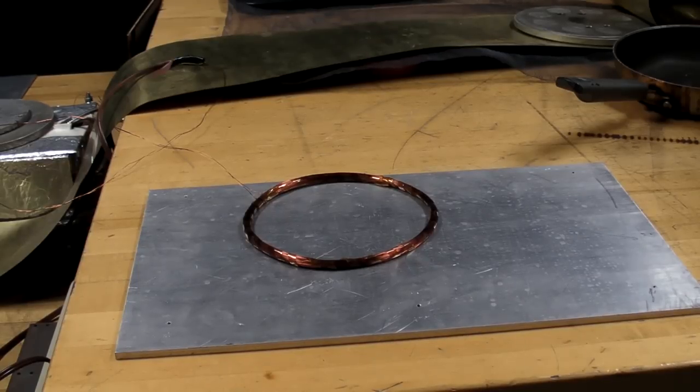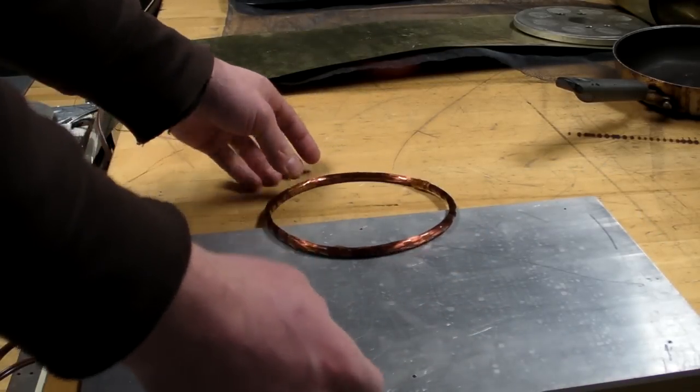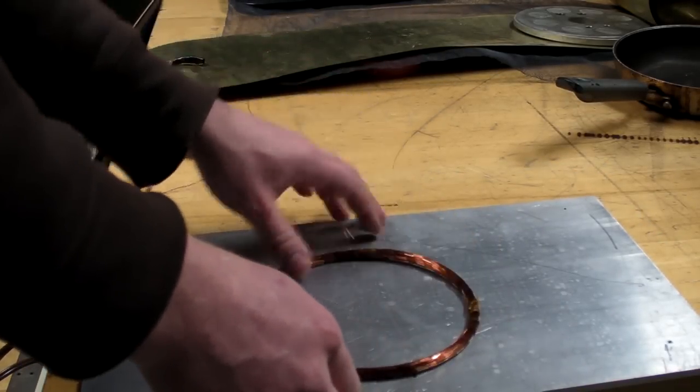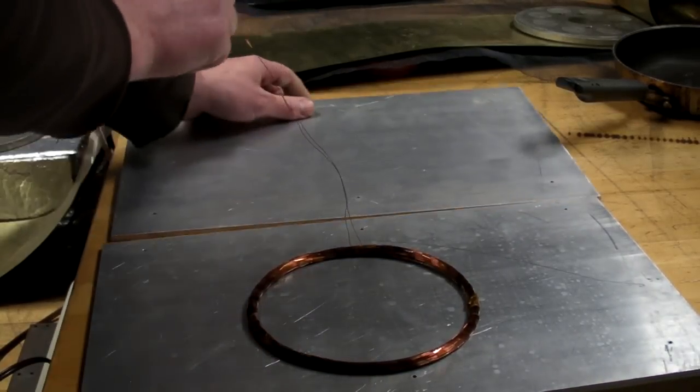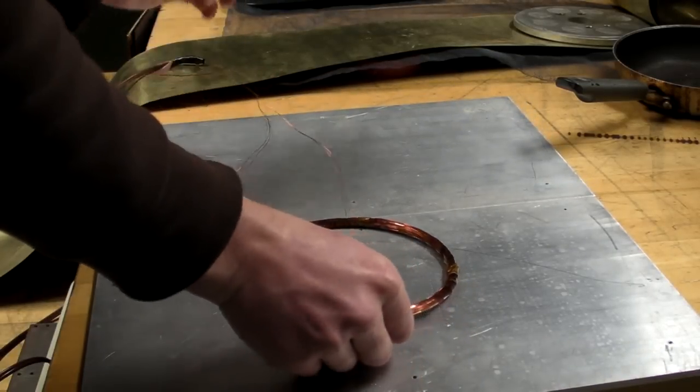Now, since the coil always wants to go toward the edge of the plate, I figured why not give it another edge to go on in the opposite direction like that.